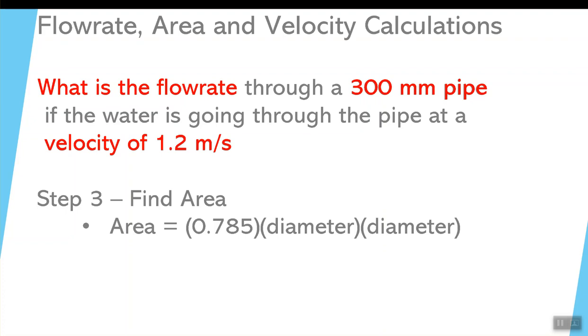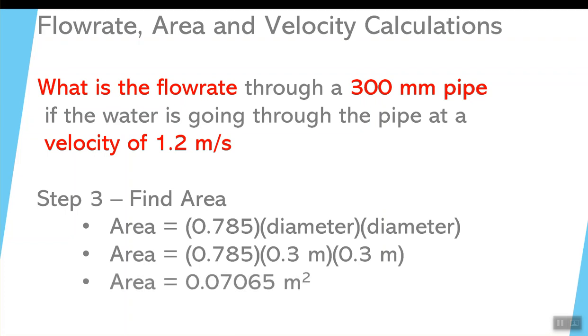0.785 times diameter times diameter. You plug the numbers in. Notice, 300 millimeters is 0.3 meters. Multiply that all out. 0.07065 meters squared. So, that's the area of the pipe.